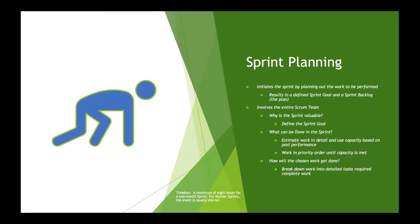Sprint planning is the first event within the sprint. For a one-month sprint, sprint planning should be limited to a maximum of eight hours, and for shorter sprints the event is usually shorter. The entire Scrum team is involved with sprint planning, meaning that the Scrum Master, the Product Owner, and the developers all participate in the event.